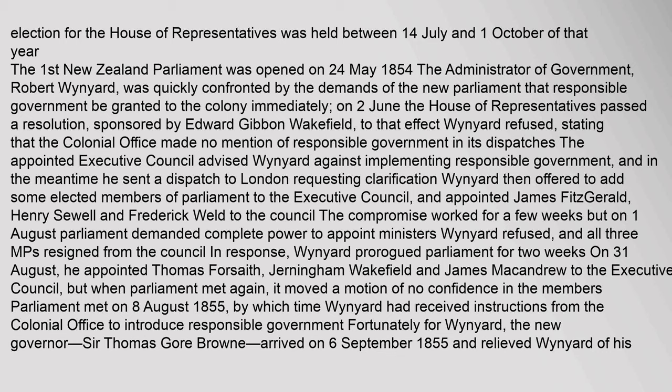The compromise worked for a few weeks, but on 1 August Parliament demanded complete power to appoint ministers. Wynyard refused, and all three MPs resigned from the Council in response. Wynyard prorogued Parliament for two weeks. On 31 August, he appointed Thomas Forsythe, Jerningham Wakefield, and James McAndrew to the Executive Council, but when Parliament met again, it moved a motion of no confidence in the members. Parliament met on 8 August 1855, by which time Wynyard had received instructions from the Colonial Office to introduce responsible government.